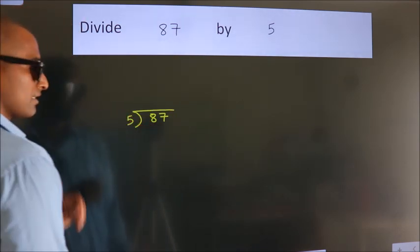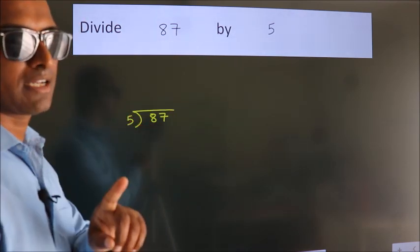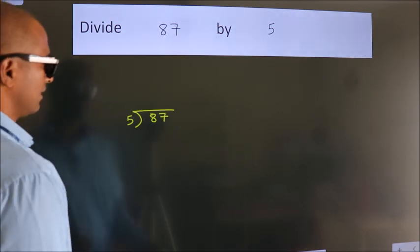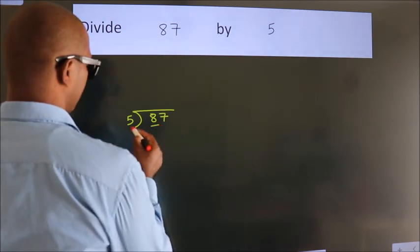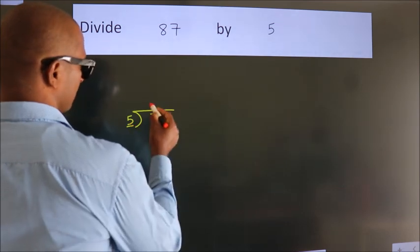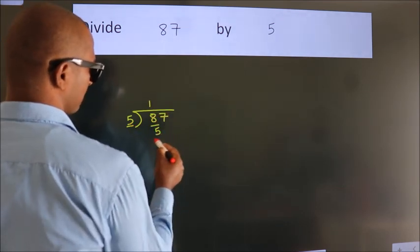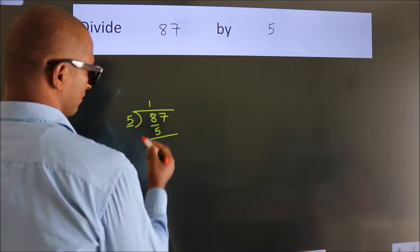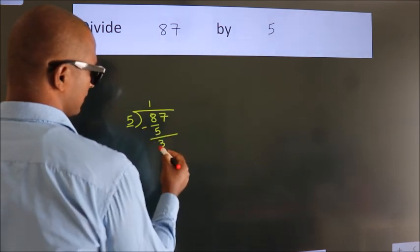This is your step 1. Next, here we have 8, here 5. A number close to 8 in 5 table is 5 once 5. Now we should subtract. We get 3.